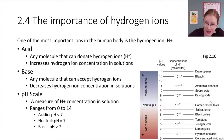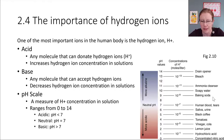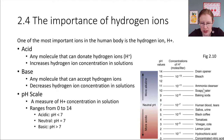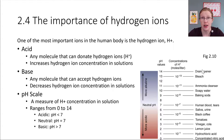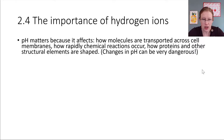On the basic end of things, baking soda is a very standard basic item that we probably all have in our kitchens. A lot of soaps and cleaners also tend to be on the basic end. So the difference between acids and bases all comes back to these hydrogen ions and what the solution is doing with them.